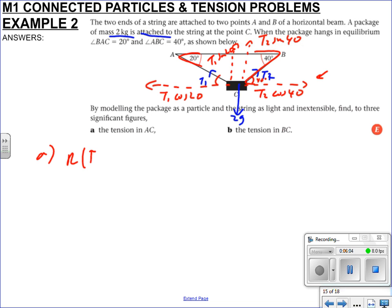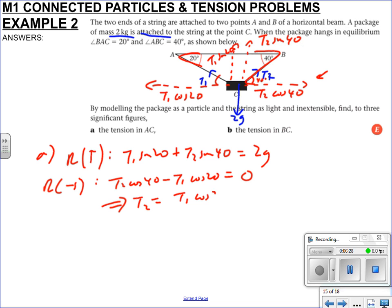Now we can solve this problem. It looks horrible but we can do this. If we resolve up, we get T1 sin 20 plus T2 sin 40 equals 2g. If we resolve left-right, T2 cos 40 minus T1 cos 20 equals 0 as it's in equilibrium. So T2 must be T1 cos 20 divided by cos 40.